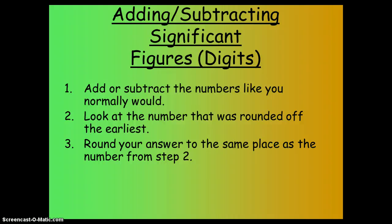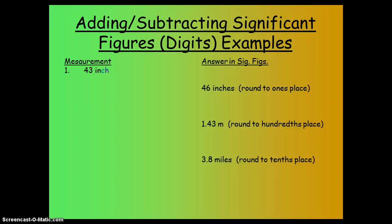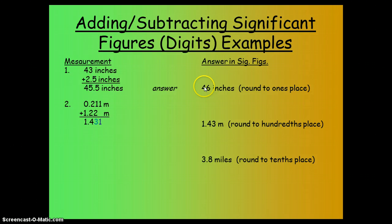Adding and subtracting with significant digits. Hit pause if you want to read these, but I'm going to show you the examples. If you measured 43 inches and you added 2.5 to that, your answer would be 45.5. You round that up because you can only go with the number that gets rounded off the soonest, which in this case is 43, getting rounded off to the ones place. So your answer rounds to the ones place.